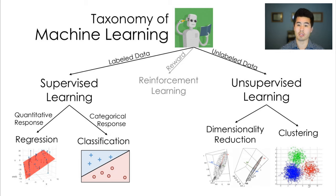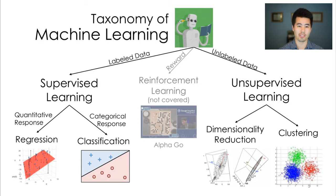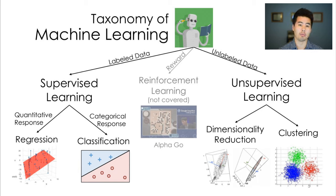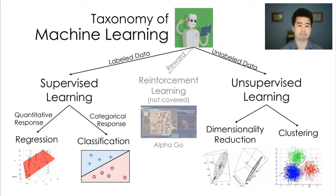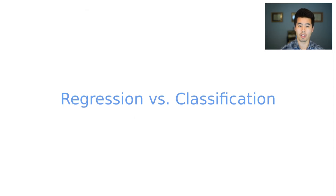One thing we won't cover this semester is agent-based learning types of machine learning, which are a bit further from data science and include reinforcement learning most notably. So we're focusing on supervised classification problems today.